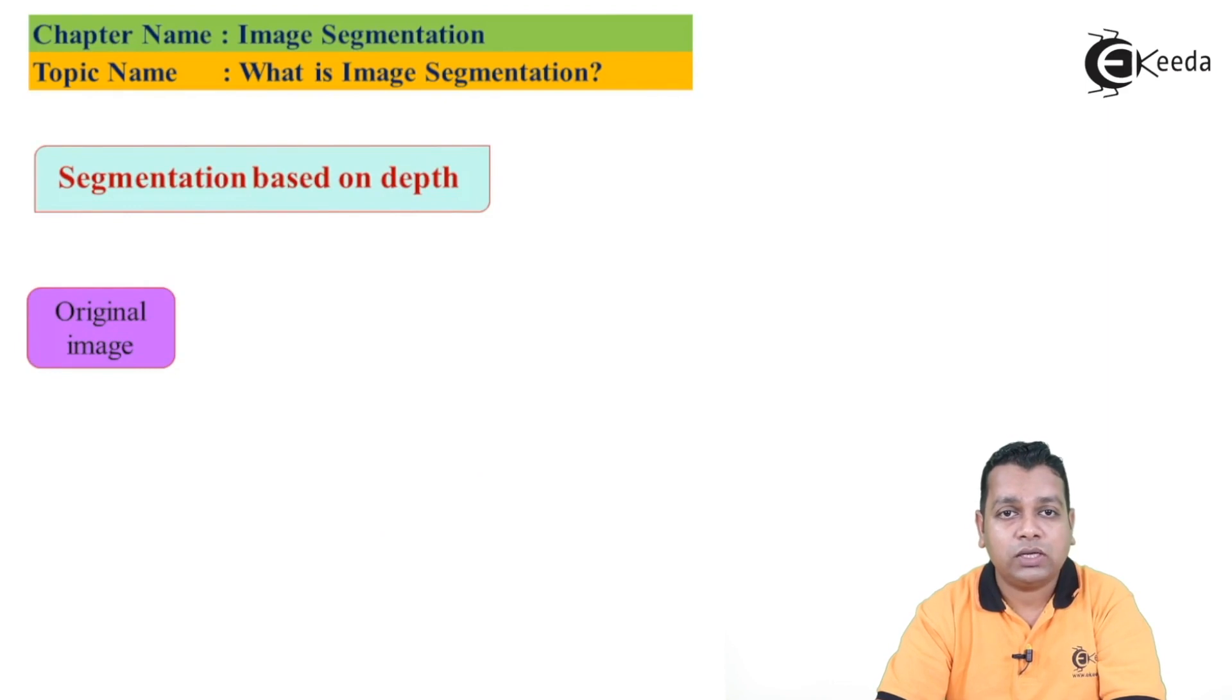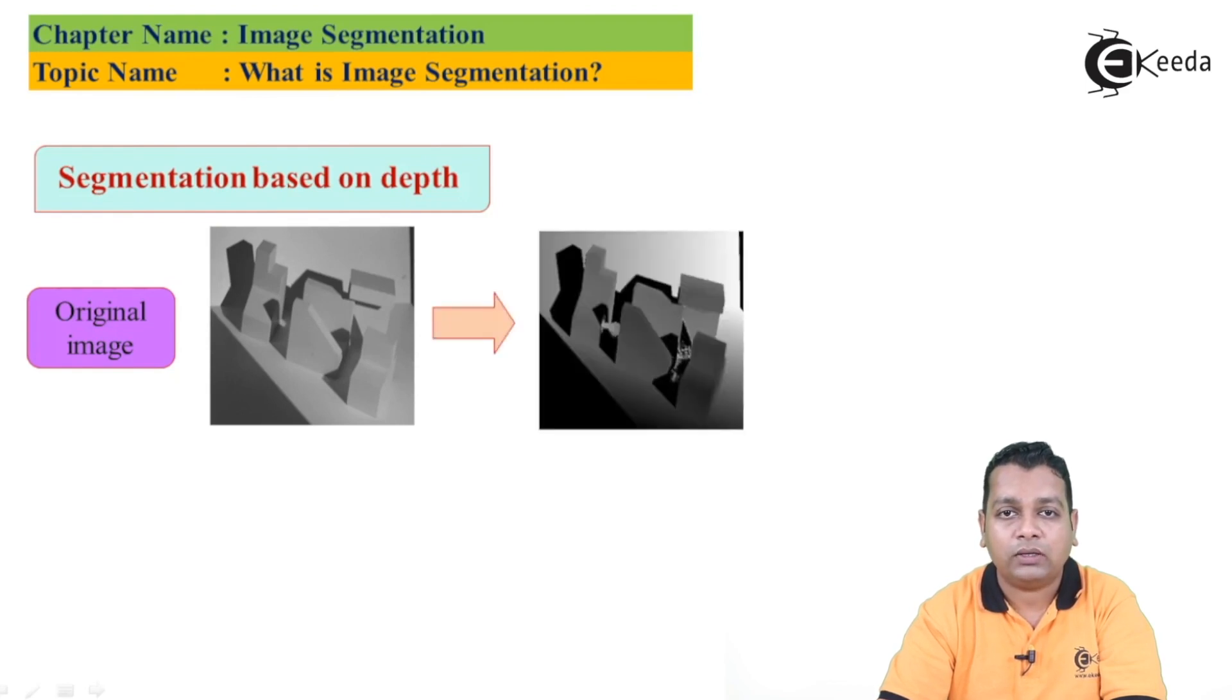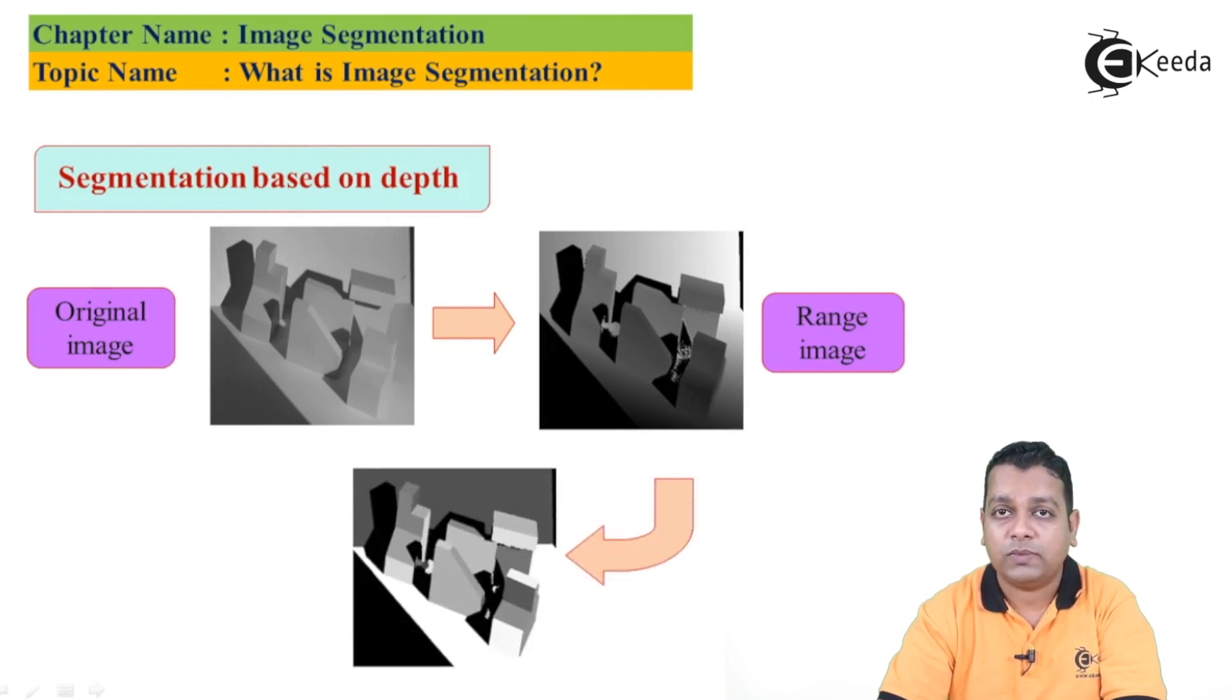Now another criteria is also there: segmentation based onto the depth. So based onto the depth, this block diagram displays the simple process here. So the original image can be represented like this, and after having the segmentation intermediate step can be like this, so we obtain a range image. The classification or the types of images we have already covered into the initial chapters of this subject. So range image is also obtained from the original here the grayscale image. Then after having a certain algorithm of the image segmentation, we find here segmented image.